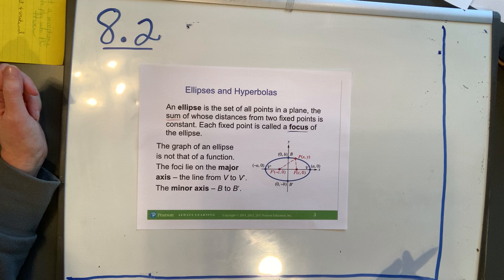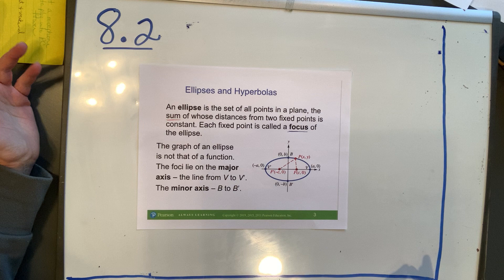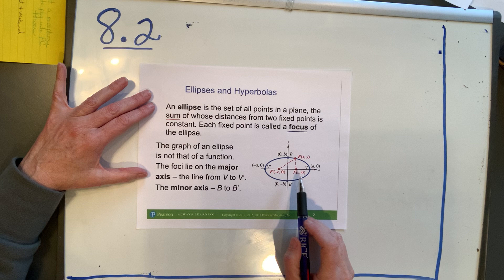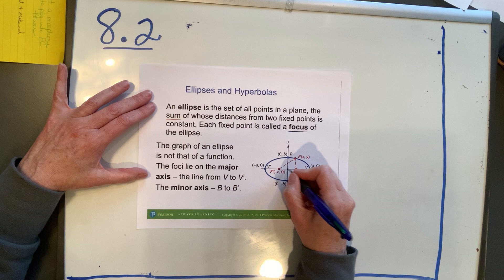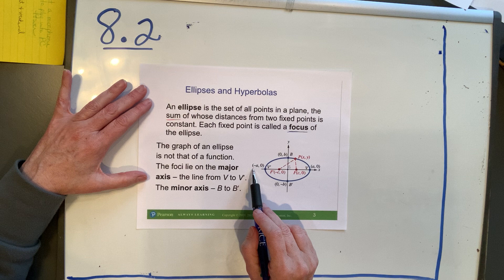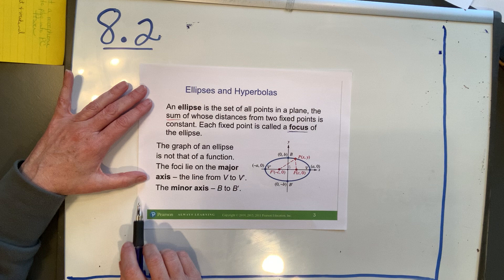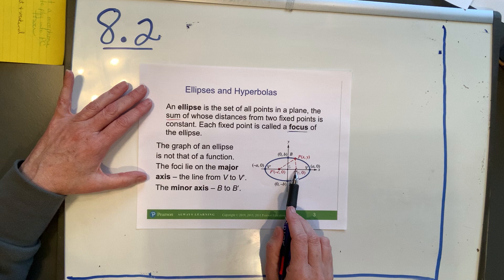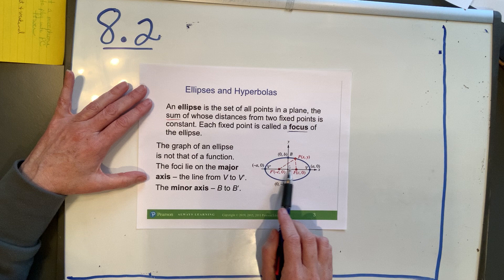Here we have a graph of a horizontal ellipse — horizontal because it's more wide than it is tall. It's obviously not a function; it would not pass the vertical line test. Notice we have two points: a focus here and a focus here. Right in the middle is the center of that ellipse. This is horizontal, so it has a longer horizontal axis, and that horizontal axis is called the major axis. Each focus — foci is the plural of focus — they are on either side of the center along the major axis.